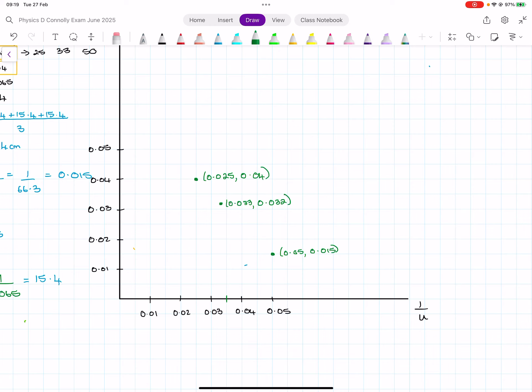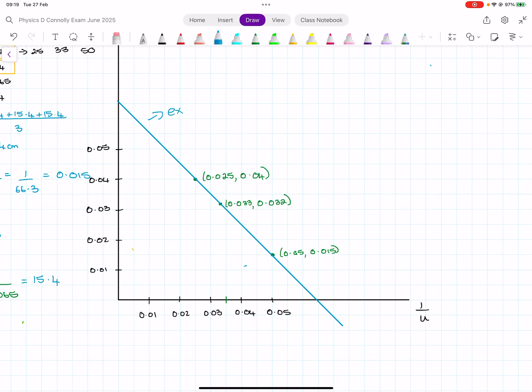This is really awkward on OneNote, so bear with me please. You want to draw a line that goes through the three dots, and then you want to extrapolate that line, which basically means lengthen it or extend it to cut both axes.